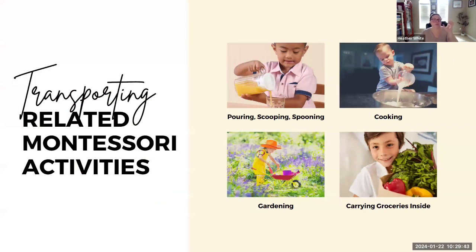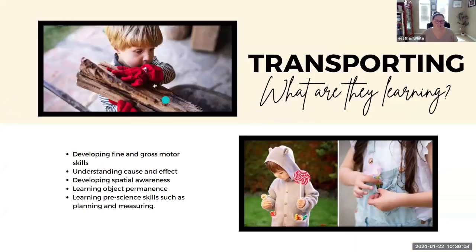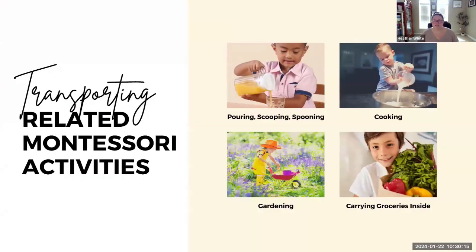For a child in the transporting schema, they might enjoy pouring, scooping, or spooning — things typically found in the practical life area of a Montessori classroom, but also easily done in the home kitchen. They might also enjoy cooking, gardening, and helping to carry things — whether it's carrying laundry to the washing machine, carrying groceries inside, or even carrying wood for a fire. Young children really enjoy this kind of work; it's the act of carrying that fascinates them.